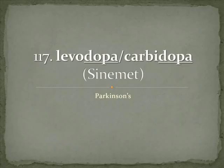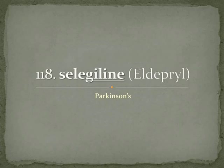Moving on to Parkinson's: levodopa/carbidopa is our standard combination medication, known as Sinemet. We see 'dopa' in both, which tells you it relates to the dopamine neurotransmitter. Levodopa is a precursor to dopamine but can't get through the blood-brain barrier on its own. Carbidopa protects the levodopa from being broken down, but carbidopa has no inherent medicinal value on its own. Selegiline is Eldepryl — again for Parkinson's — and you can think of 'elde' as Parkinson's being a disorder often found in the elderly.